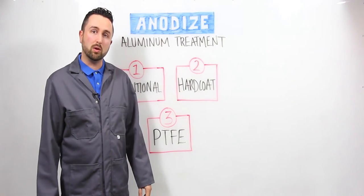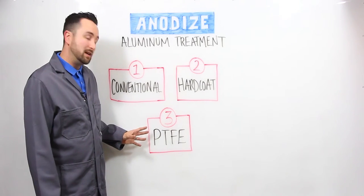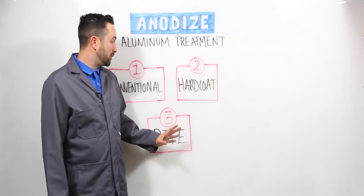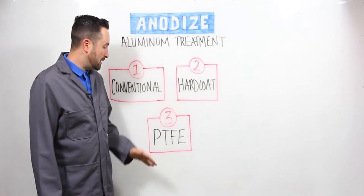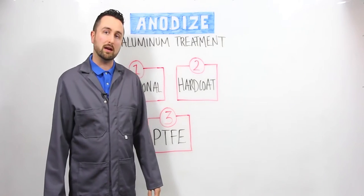If you have mold release or friction applications, we highly recommend you check out PTFE anodizing. We perform PTFE anodizing by taking hard anodizing and thermally bonding the PTFE layer to the surface of the hard anodized coating.